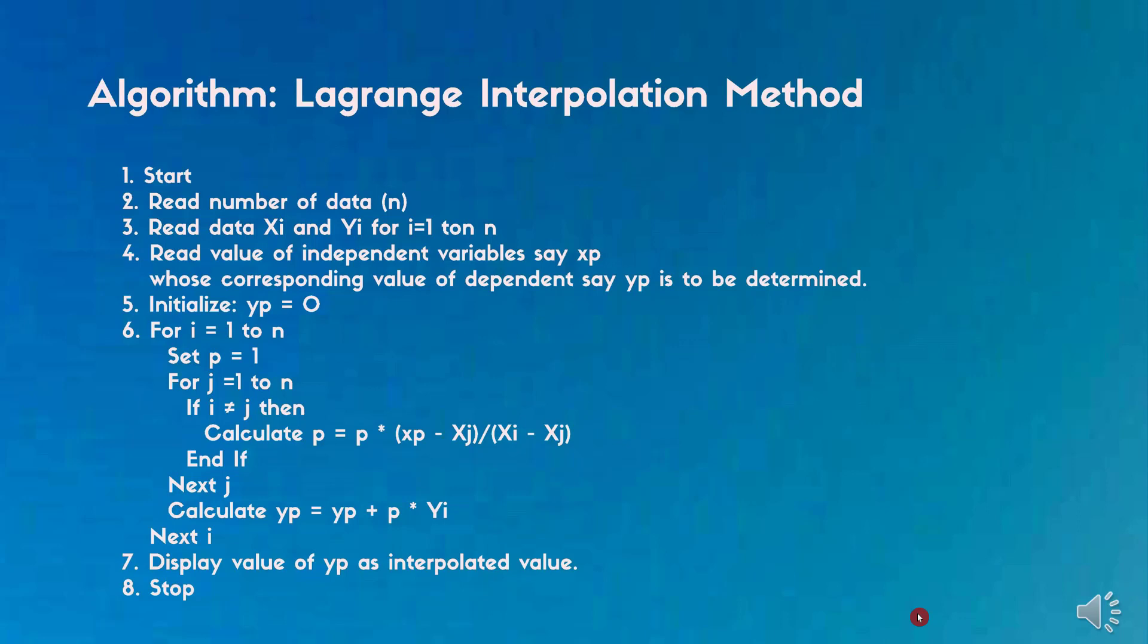Initialize yp equals 0. A for loop is initialized for i equals 1 to n. Set p equals 1. Another for loop is initialized inside the loop for j equals 1 to n. An if condition is checked - if i not equal to j, then calculate p equals p times xp minus xj divided by xi minus xj. The for loop gets executed in each increment of j.